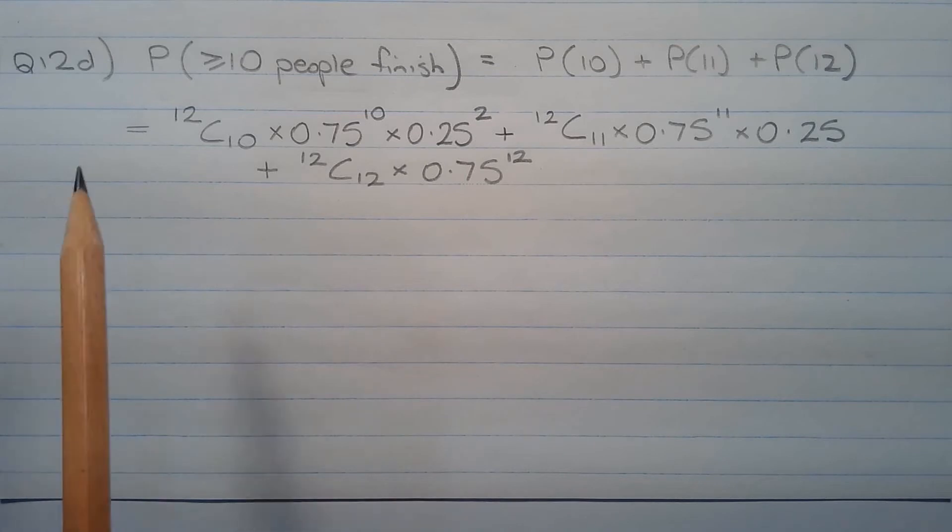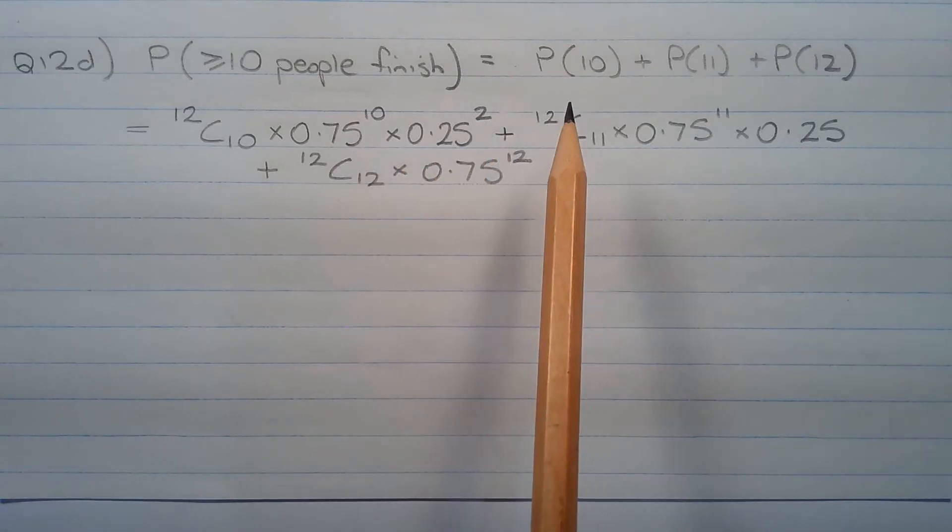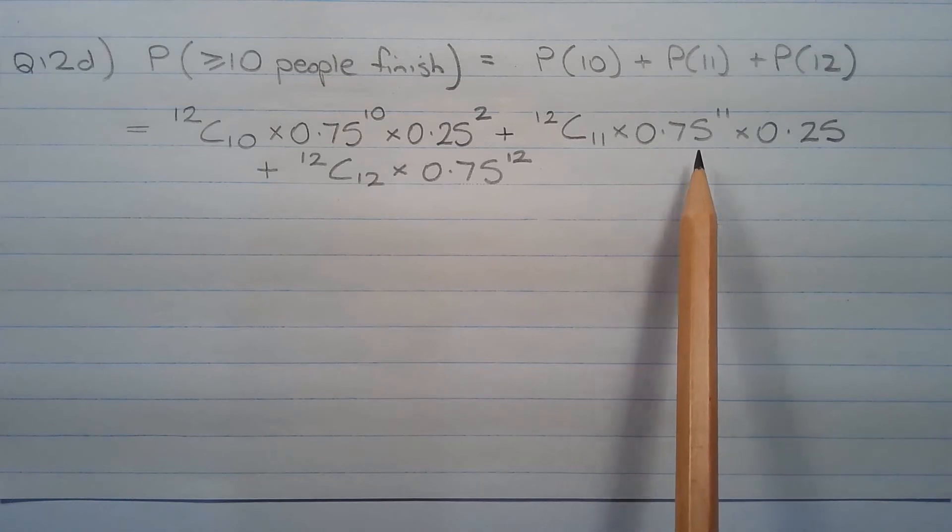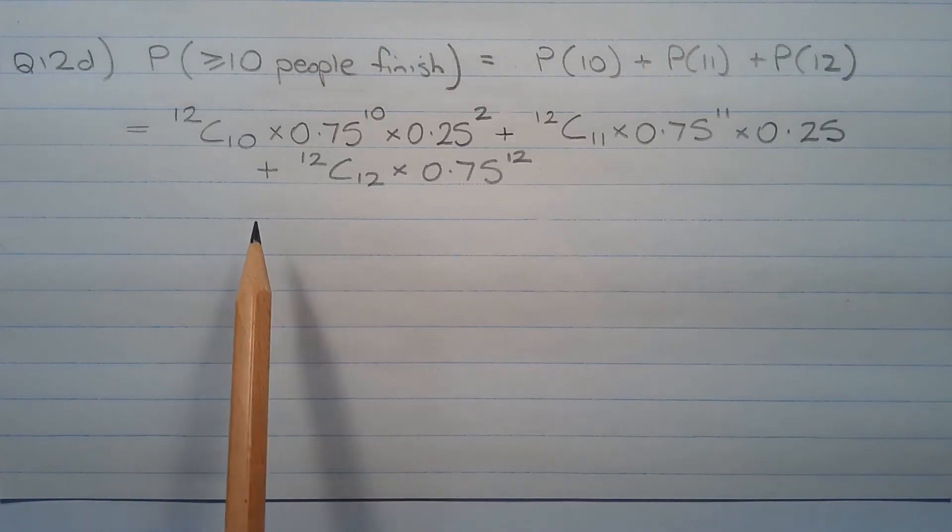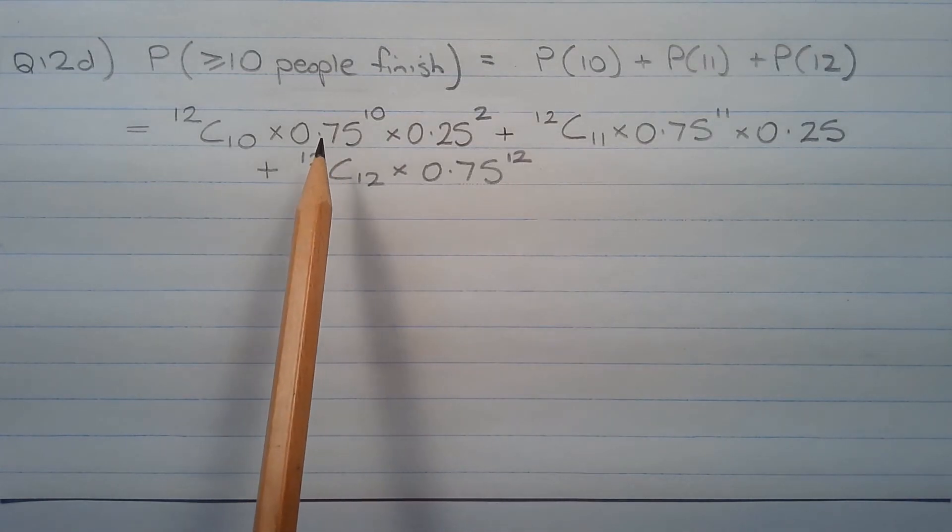Using the binomial theorem, that equals 12 choose 10 multiplied by 0.75 to the power of 10 multiplied by 0.25 squared, plus 12 choose 11 multiplied by 0.75 to the power of 11 multiplied by 0.25, plus 12 choose 12 multiplied by 0.75 to the power of 12.